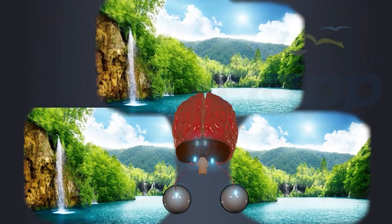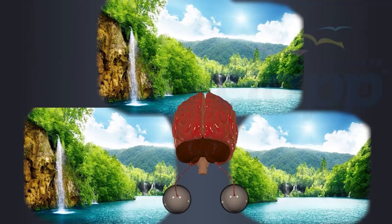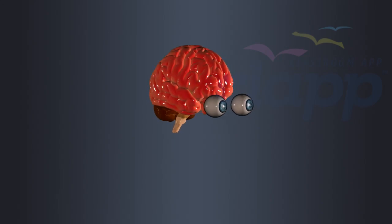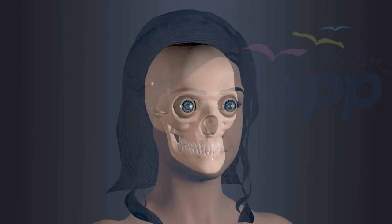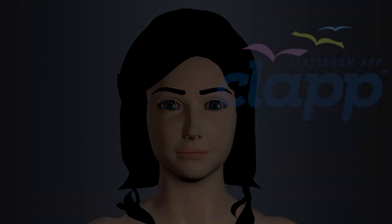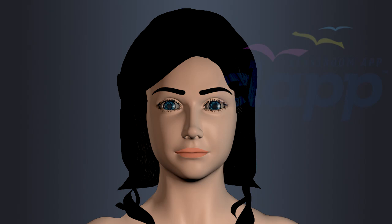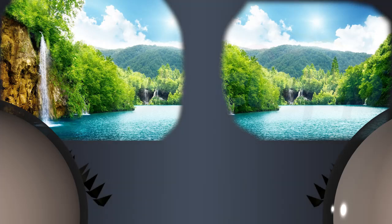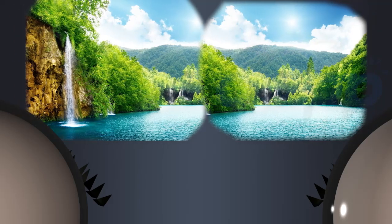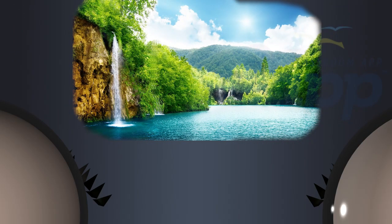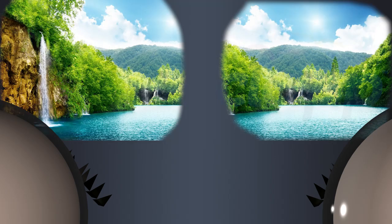Binocular vision refers to the ability of humans and some other animals to perceive depth and three-dimensional visual information by combining the images obtained from both eyes. Our eyes work together to give us a binocular or stereoscopic vision, which enhances our unique perspective on the world. Each eye has its own visual field, and the visual fields of our two eyes partially overlap, allowing us to have binocular vision.